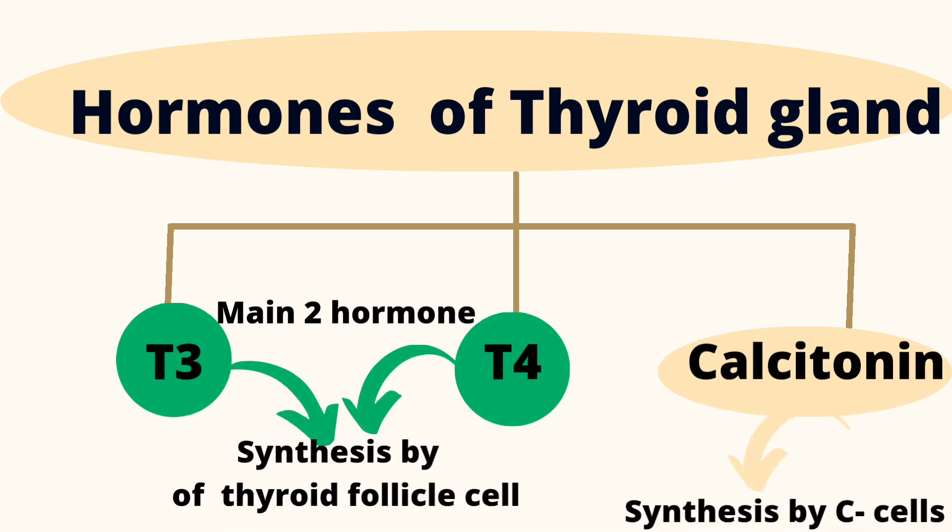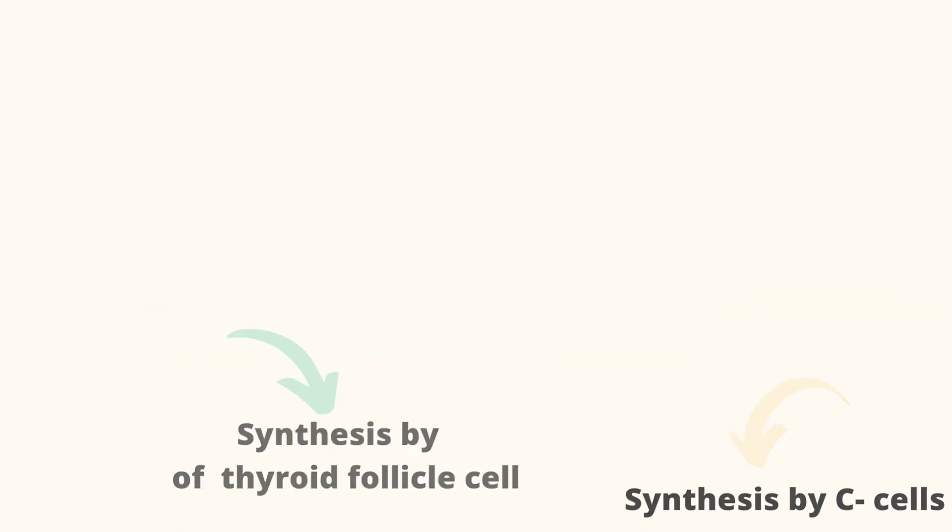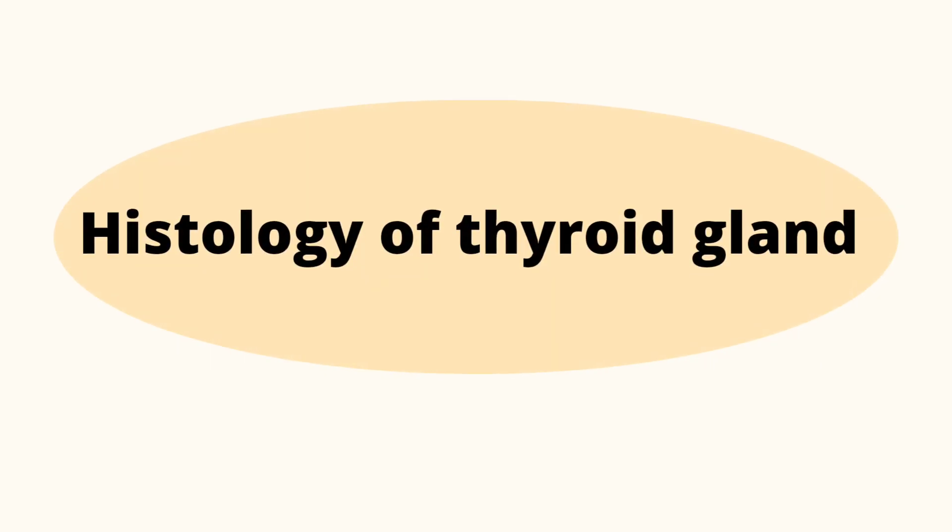The thyroid gland secretes two main hormones, T3 and T4, which are synthesized by thyroid follicle cells. The third hormone is calcitonin, which is released by parafollicular cells, also known as C cells.